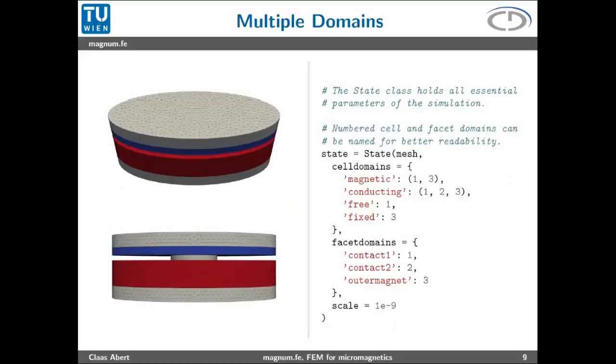How do we handle multiple domains? This is a typical multi-layer stack with two magnetic layers, the blue one and red one, connected with a conducting layer and two electrodes. We want to be able to address the complete magnetic region to tell Magnum FE to solve something on the magnetic region, but also address only one region to set some initial magnetization configuration. Within FEniCS it's possible to handle domains by giving them unique identifiers as integers. We introduced a naming convention where the same ID can be used for different names.